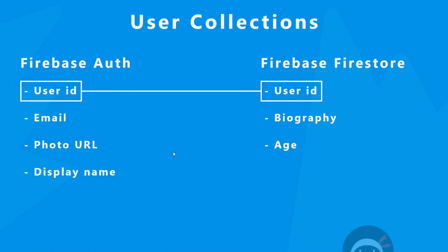Typically you don't want to store all this extra information about a user on Firebase Auth. That might seem like backwards logic at first — you might think it makes sense to have all information in one place. But think about every request you're making to Firebase: we'd be unnecessarily sending a biography, an age, links, favorites, or other data back and forth all the time, when we only need that for a profile page.